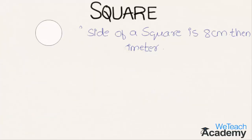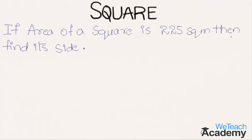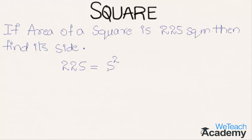Now let us discuss another example. If the area of a square is 225 square meters, find its side. We set the area formula equal to the given value: s² = 225, which gives s = √225.